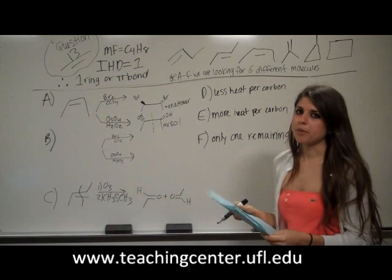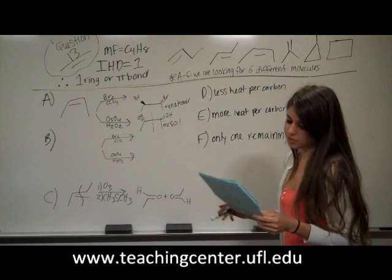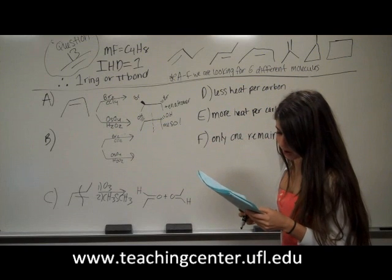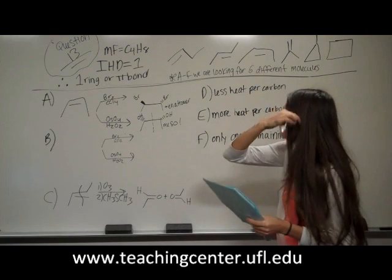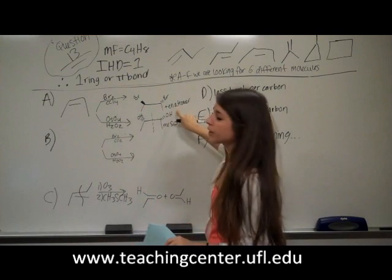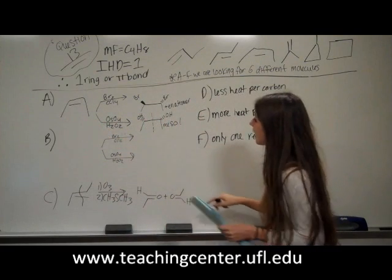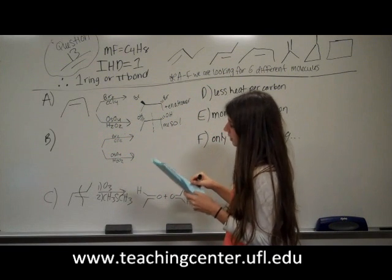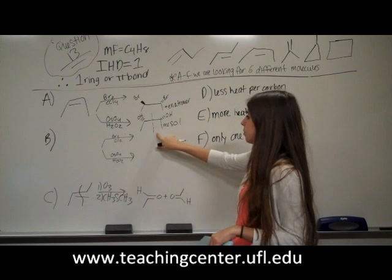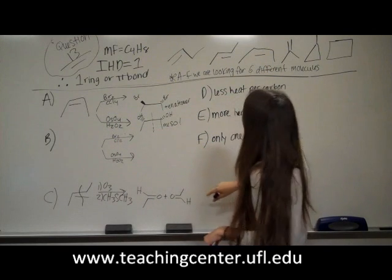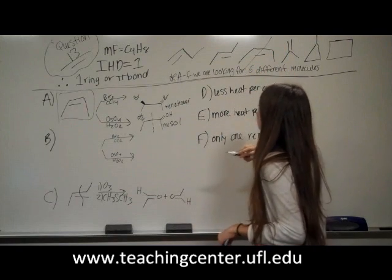We want to figure out which isomer corresponds to A through F using the information given. Unknown A, when treated with Br2 in CCl4, resulted in a racemic mixture of products. When you have Br2 and CCl4, you get an anti addition — and with cis-2-butene, osmium tetroxide gives a single optically inactive meso product with an internal mirror plane. So cis-2-butene is our answer for Unknown A. Draw it in the box provided, and cross it off the list since we can't reuse it.